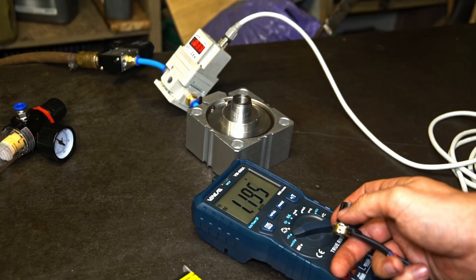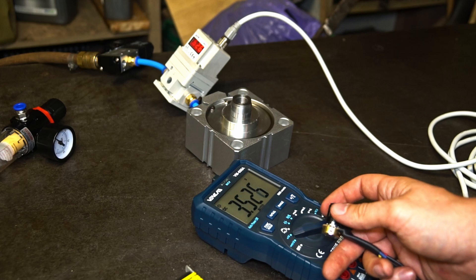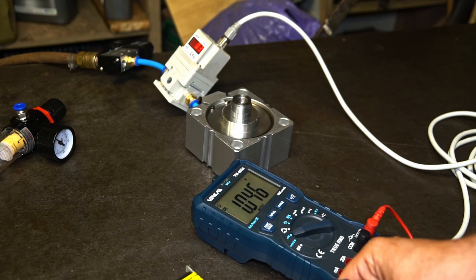Mine has a 0 to 5 volt output, so there should be 0 volt at 0 pressure and about 3.5 at 7 bar. I guess it kind of works.